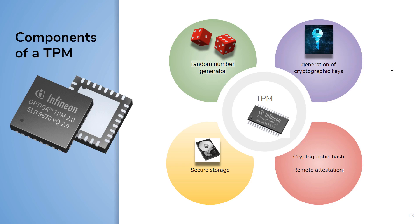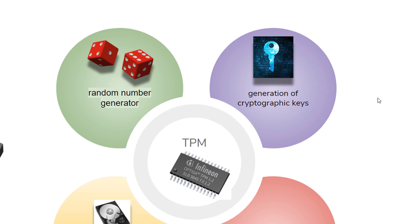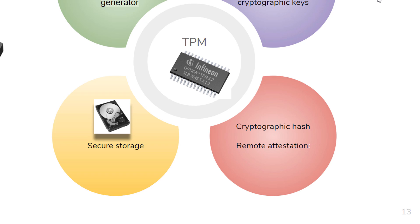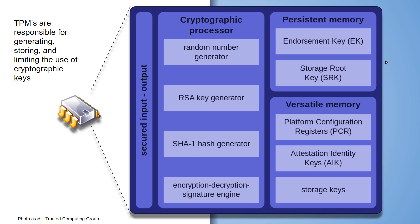So what makes up a TPM? They are complicated — I'm really simplifying this discussion. Some of the major components include random number generators, generation of cryptographic keys, secure storage of cryptographic keys, hashing, and remote attestation — which we'll find is so important in today's implementation of TPM. TPMs are ground zero as hardware platforms implement fundamental, robust security.